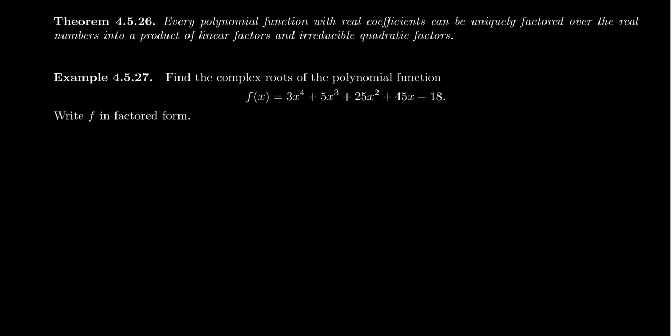I'm going to first look for the rational roots. Notice there's one variation of signs, so that tells me there's going to be one positive root. If we look for the negative variations, it's going to be three or one. So we're going to have definitely one positive root and either one negative root or three negative roots.